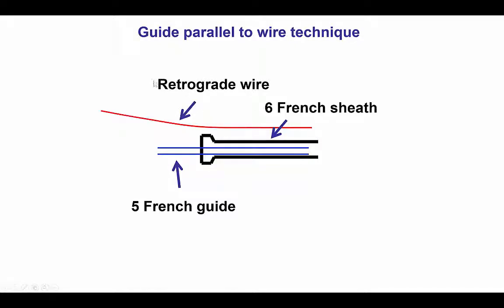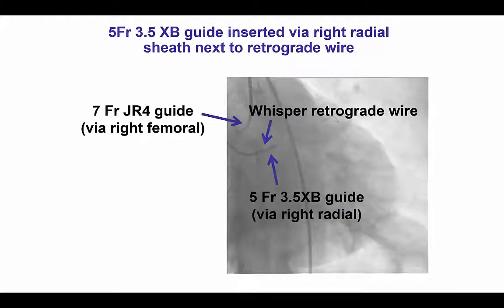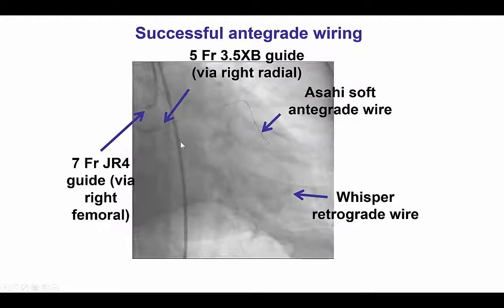We then devised a technique called guide-parallel-to-wire, in which we advanced a 5 French guide catheter next to the retrograde wire through the same 6 French radial guide catheter, and then engaged the left main through this 3.5 XP guide catheter. Now we had an antegrade guide catheter next to the retrograde externalized guidewire. Fortunately, we were then able to advance a Workhorse wire — because we had ballooned the LAD — and the wire easily crossed from the proximal LAD through the occlusion to the mid-LAD.